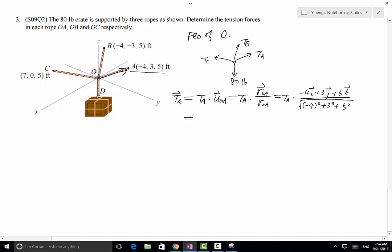And this equals negative 4 over square root of 50 times TA i, plus 3 over square root of 50 times TA j, plus 5 over square root of 50 times TA k, in units of pounds. I'm keeping these instead of evaluating them because this is simply an intermediate step.